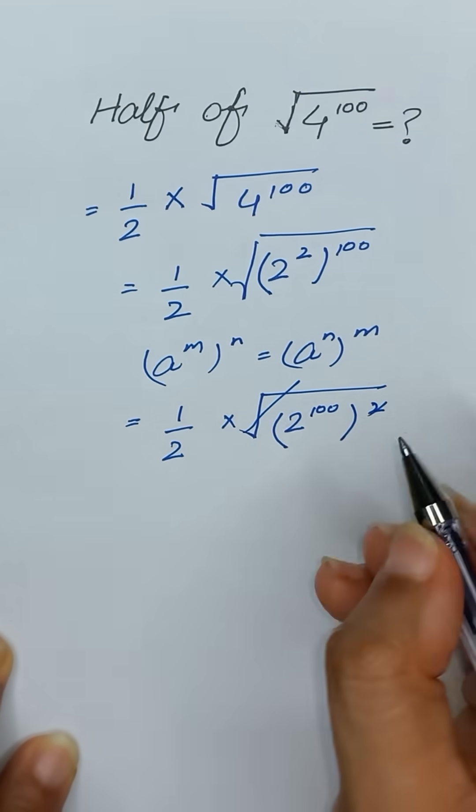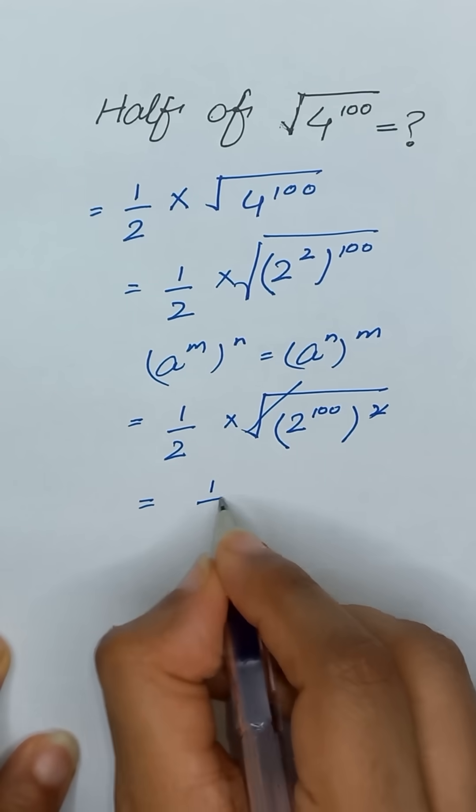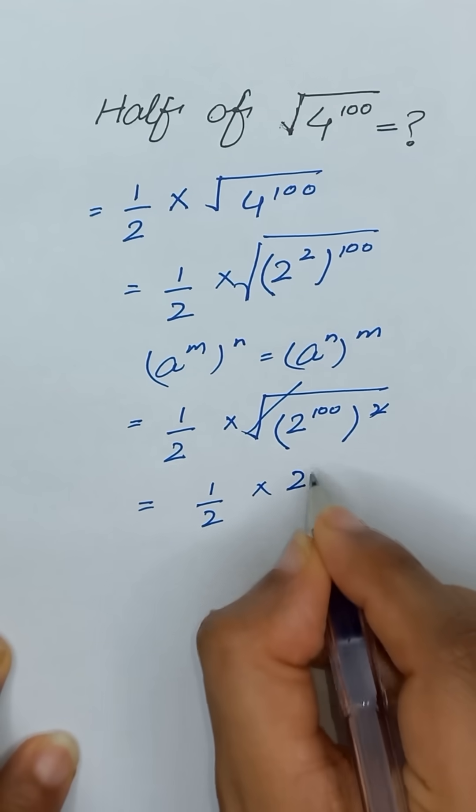So this square and square root will be cancelled out and it will give us 1 divided by 2 times 2 to the power 100.